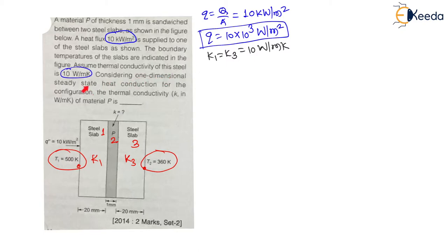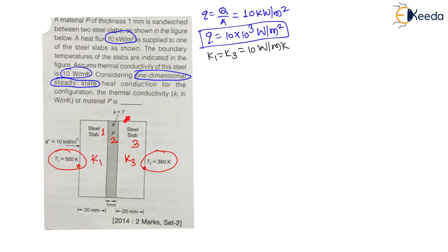We consider one-dimensional steady-state heat conduction — that is, heat flows only along the x-direction. Steady state means temperature does not change with respect to time, so the heat flux flowing through each slab is the same at every location. We need to find the thermal conductivity k of material P.